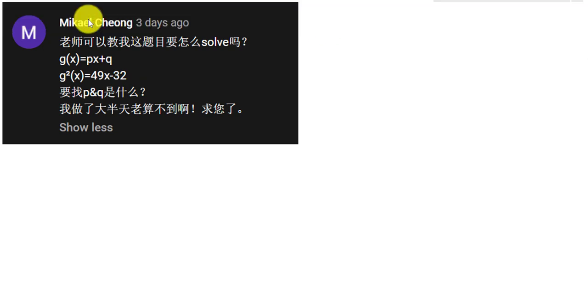This function question basically is like we have g(x) equals px plus q, and then we have g²(x) equals 49x minus 32, and then they ask us to find p and q.